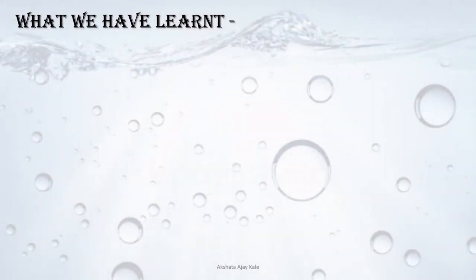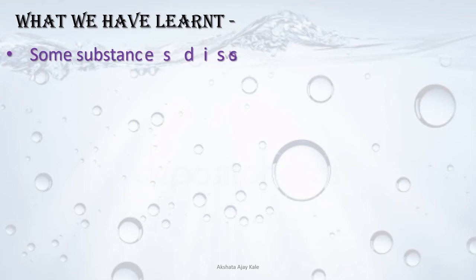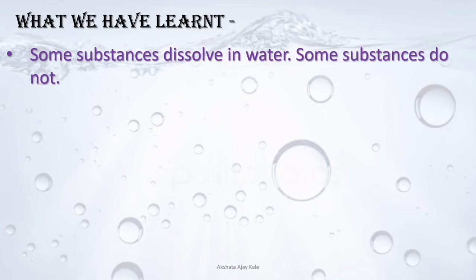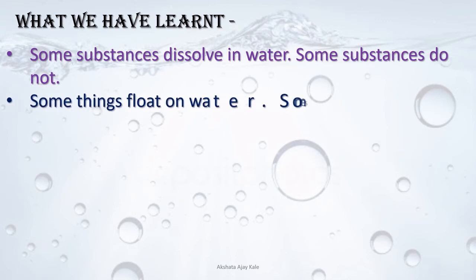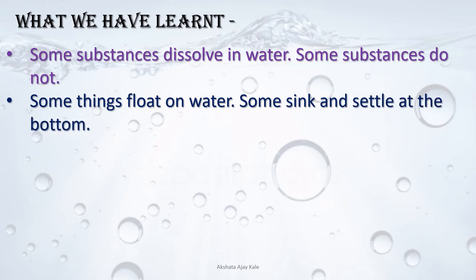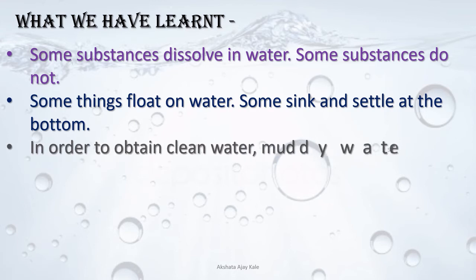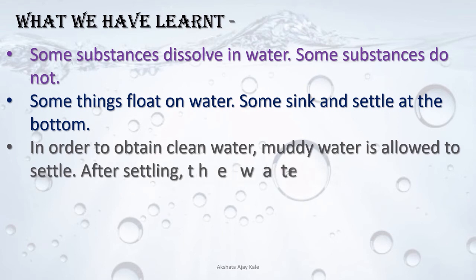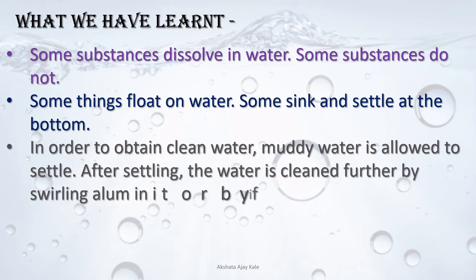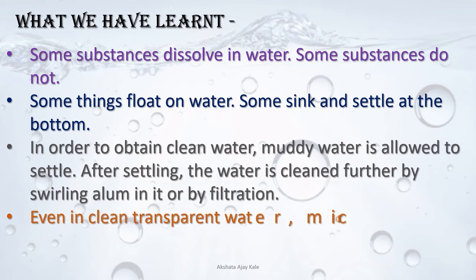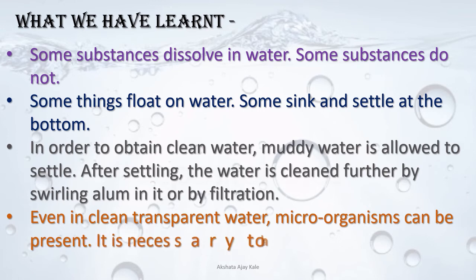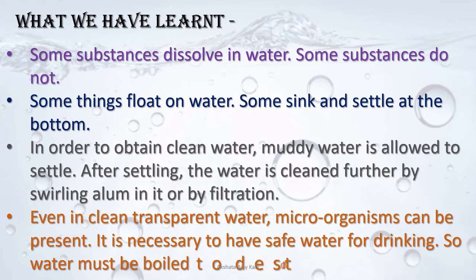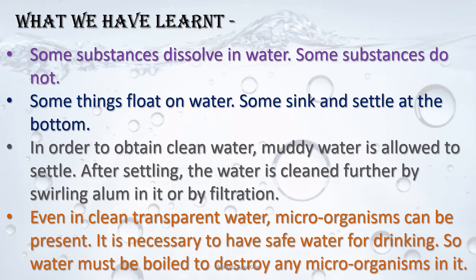Let us take a quick summary. Some substances dissolve in water, some do not. Some things float on water, some sink and settle at the bottom. To obtain clean water, muddy water is allowed to settle. After settling, water is cleaned further by swirling alum in it or by filtration. Even in clean transparent water, microorganisms can be present, so water must be boiled to destroy them.